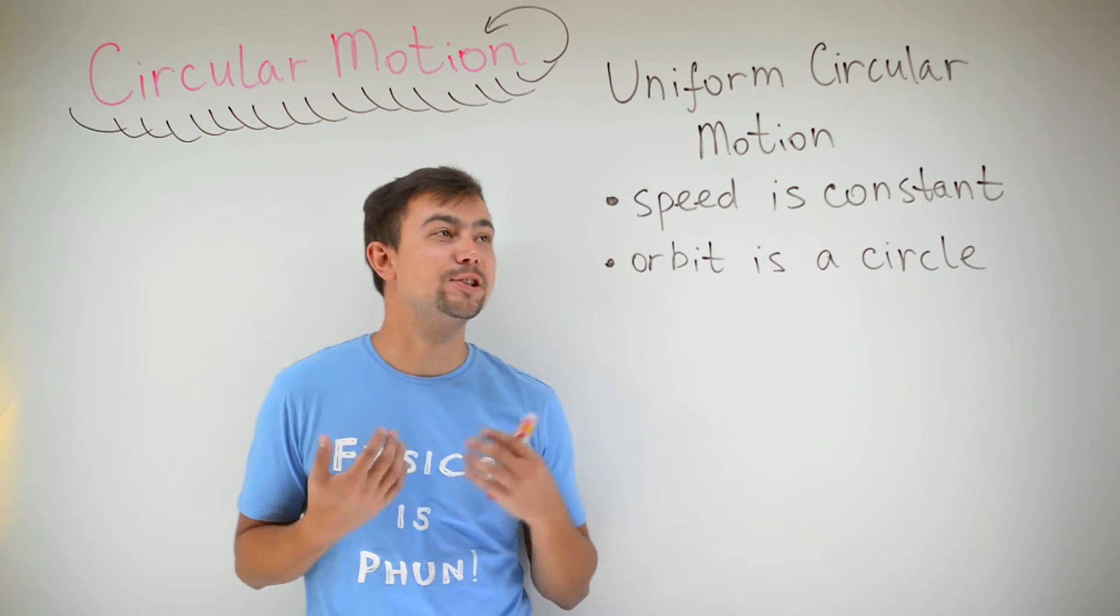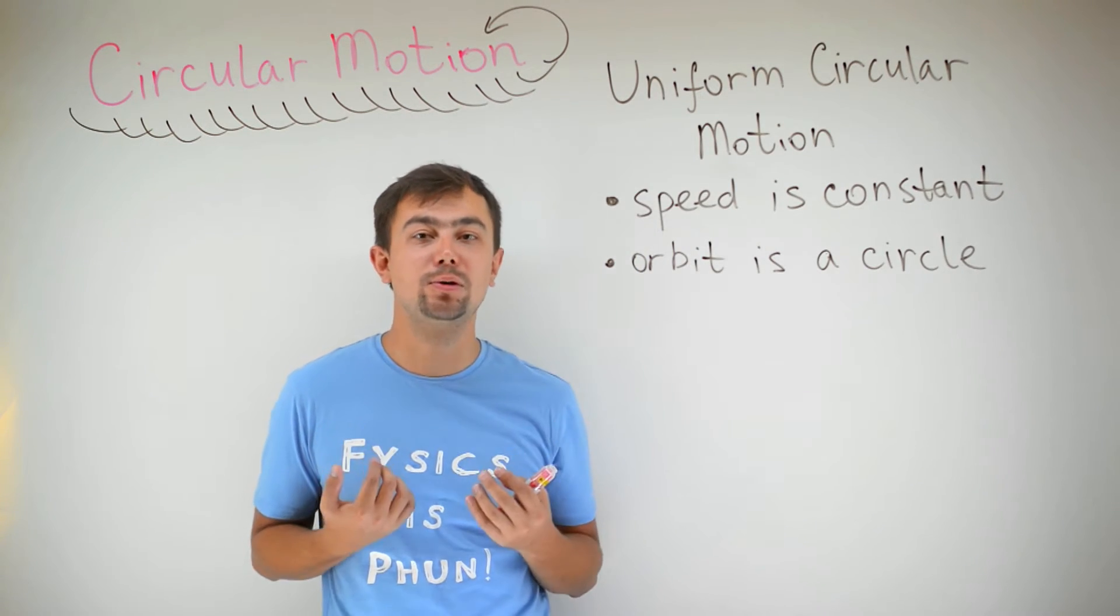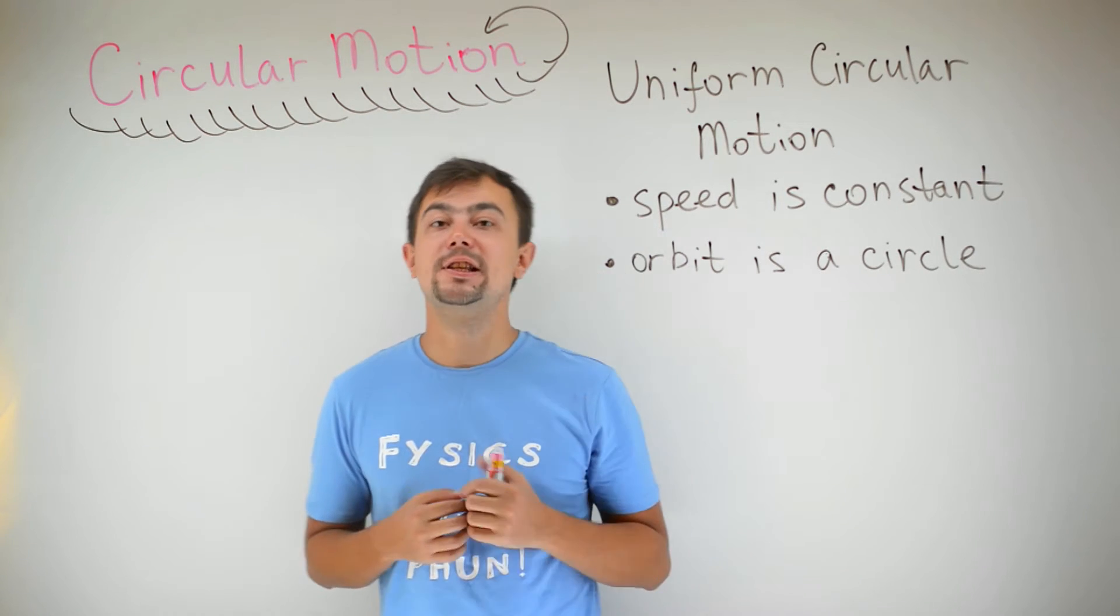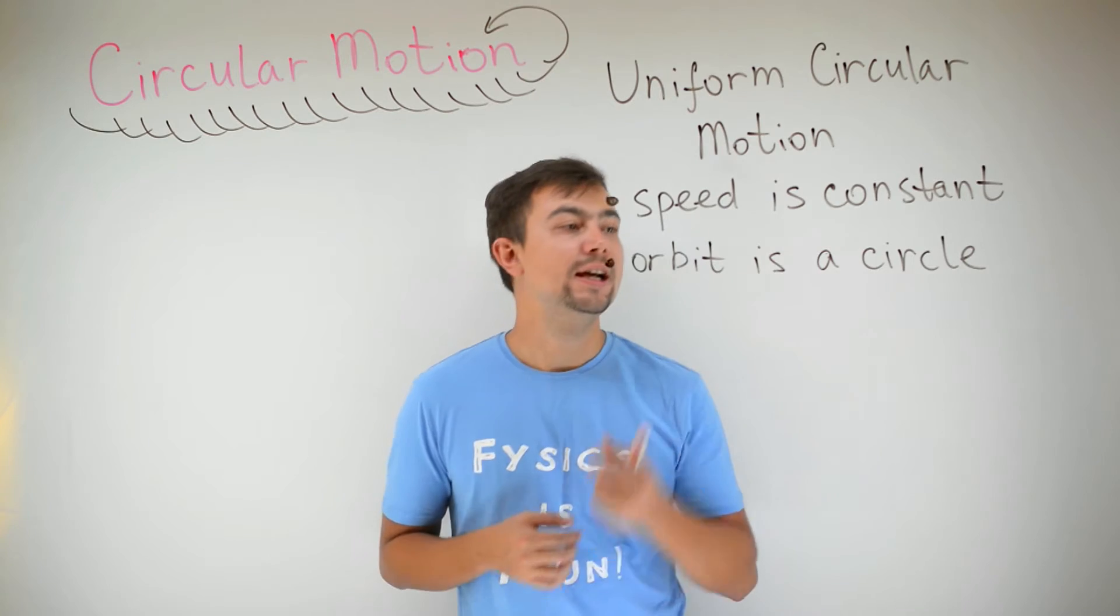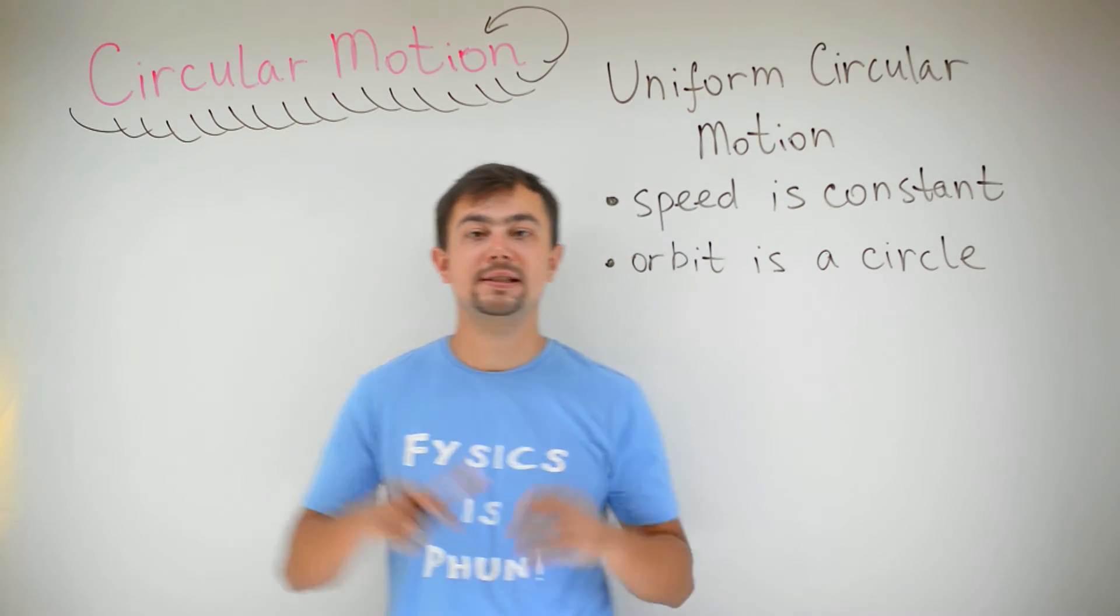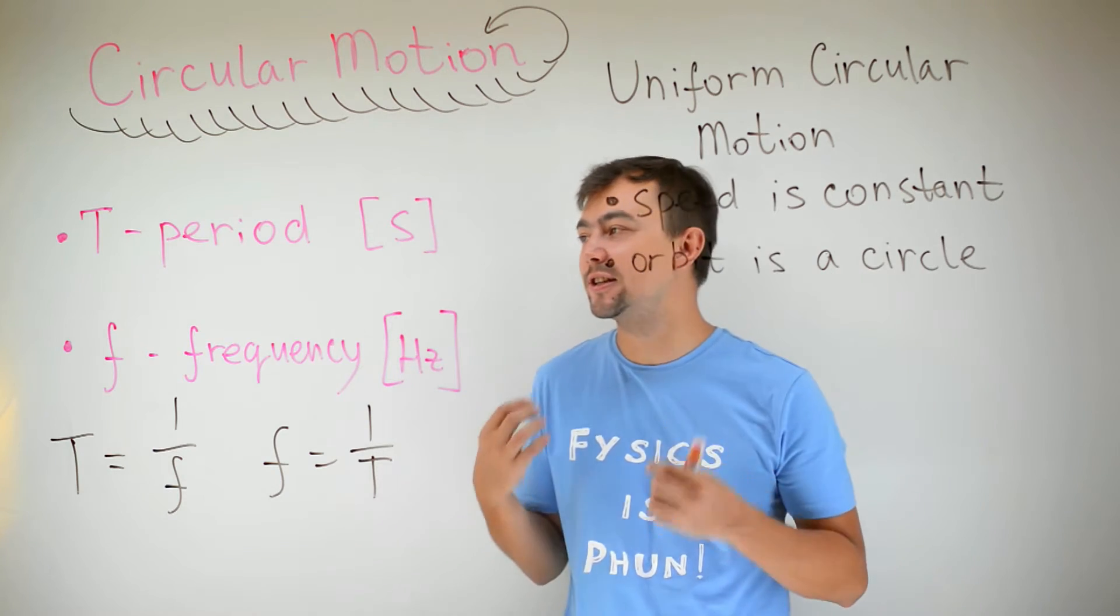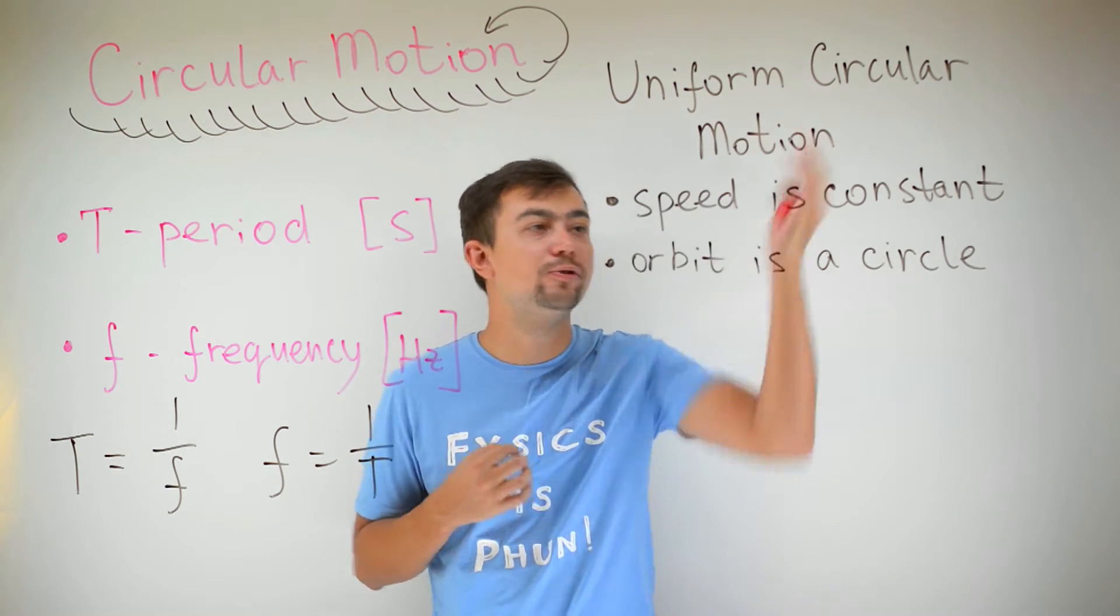This type of motion is called uniform circular motion. It has two main characteristics. First, the speed of motion is constant. And second, the orbit is an ideal circle. There are also two important physical quantities connected with uniform circular motion, and these are period and frequency.